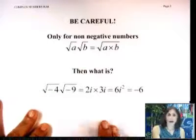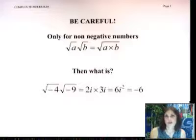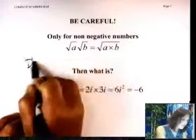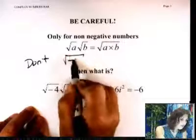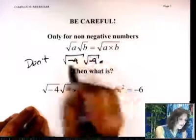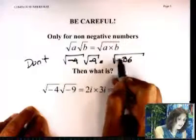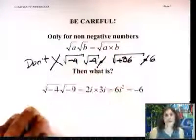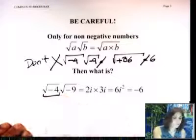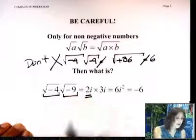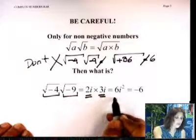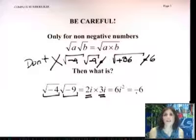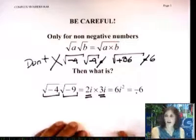Be careful: the product rule only applies to non-negative numbers. You cannot say √(-4) · √(-9) = √((-4)(-9)) = √36 = 6. Don't ever do that. Instead, √(-4) is 2i, √(-9) is 3i, so 2i times 3i is 6i², and since i² = -1, you get negative 6.